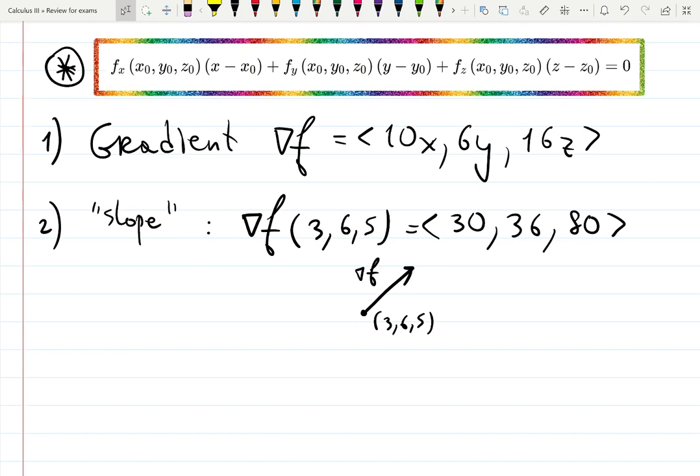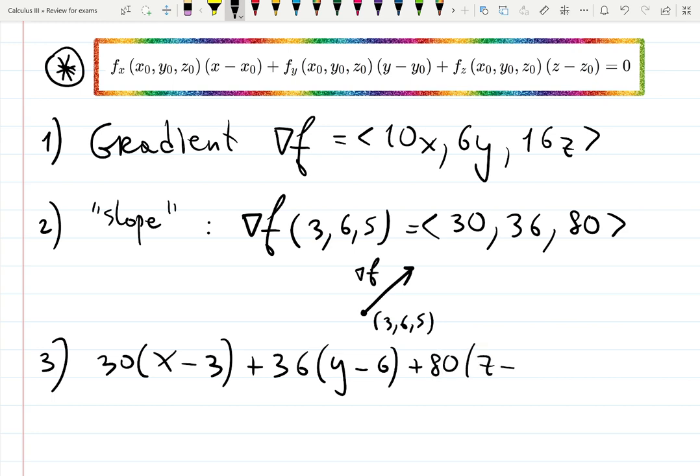First derivative at the point gave me 30 times (x minus 3). Second derivative at the point gave me 36 times (y minus 6). And the third one is 80 times (z minus 5) equals 0.